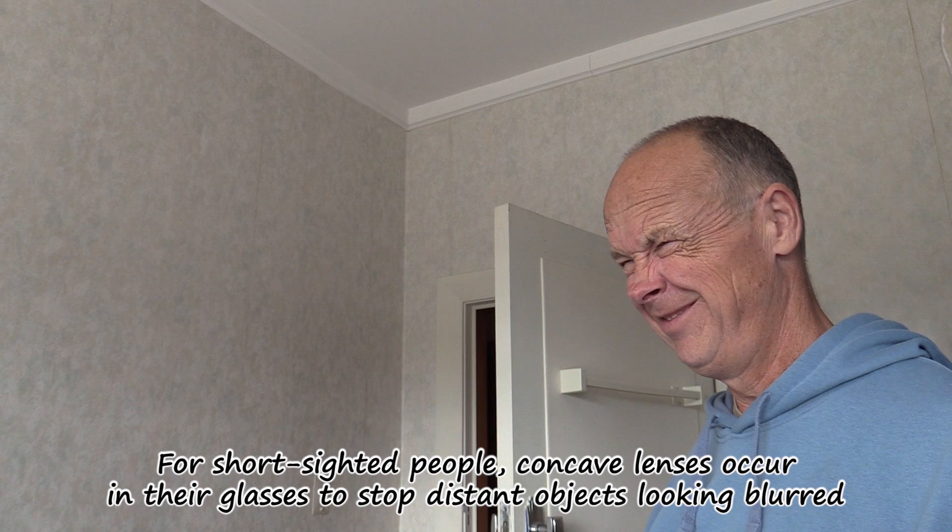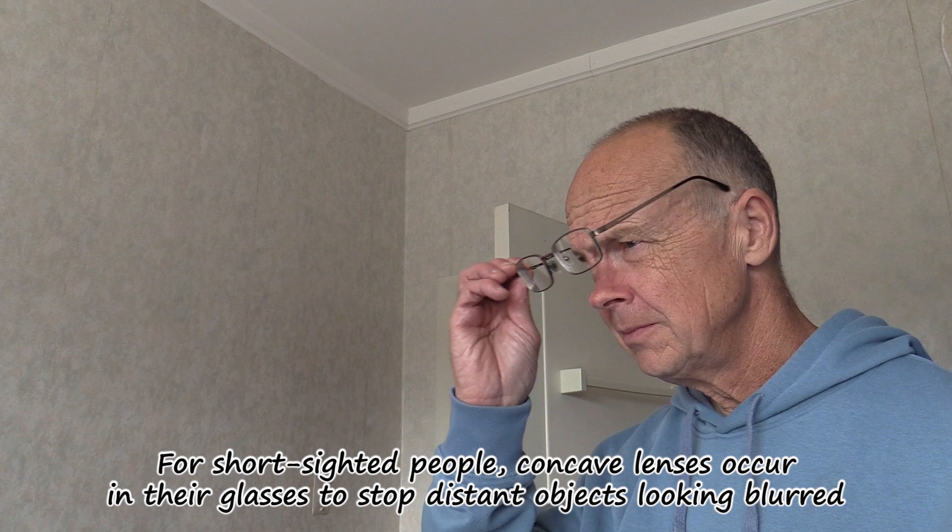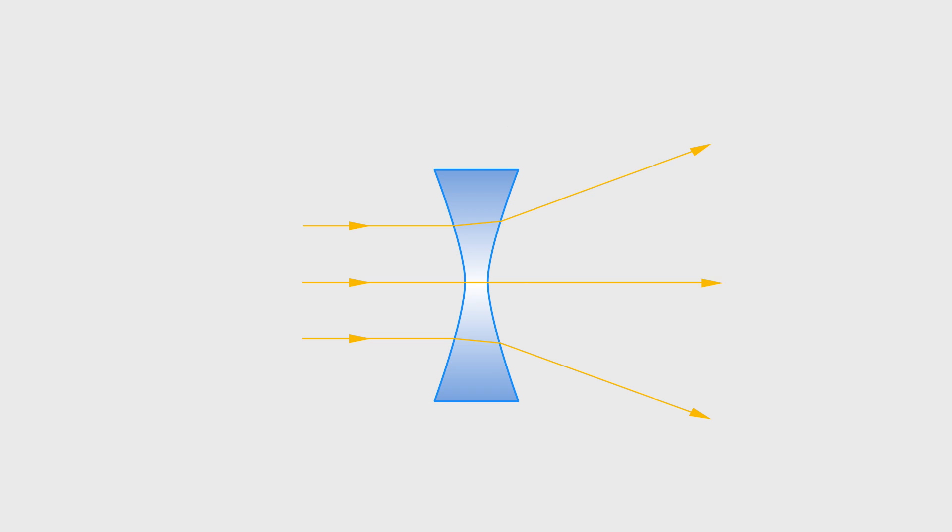For short-sighted people, concave lenses occur in their glasses to stop distant objects looking blurred.